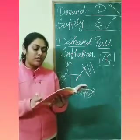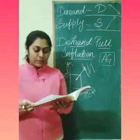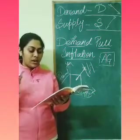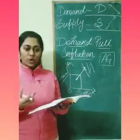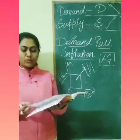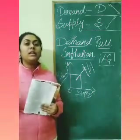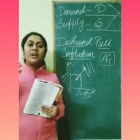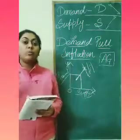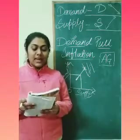Now let's look at the causes of demand pull inflation. First is increase in public expenditure — when the government spends more and fails to mobilize sufficient funds to meet its expenditure. Second is increase in income — if people's income increases, their purchasing power increases, and they are willing to spend more on products and commodities.